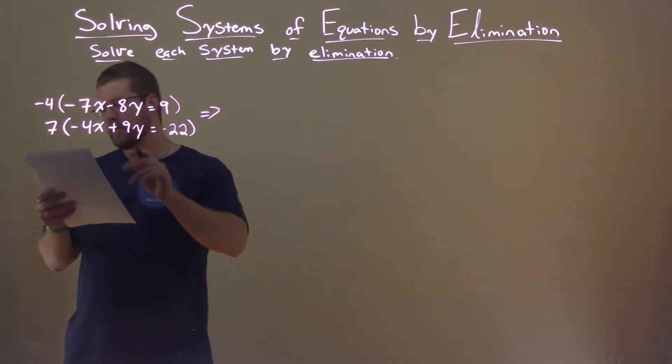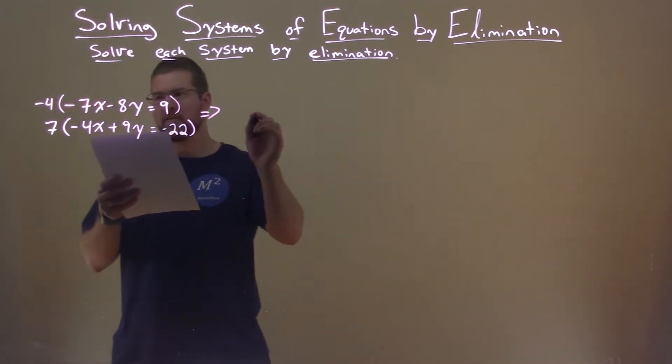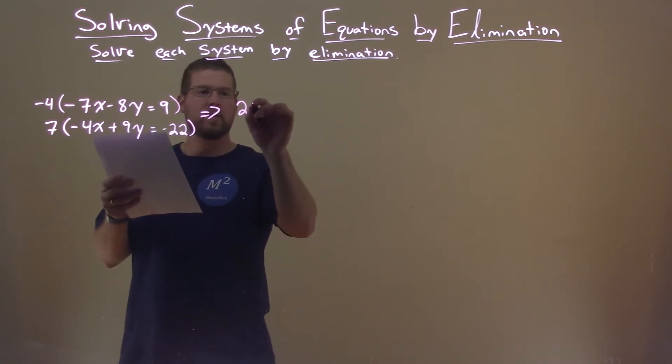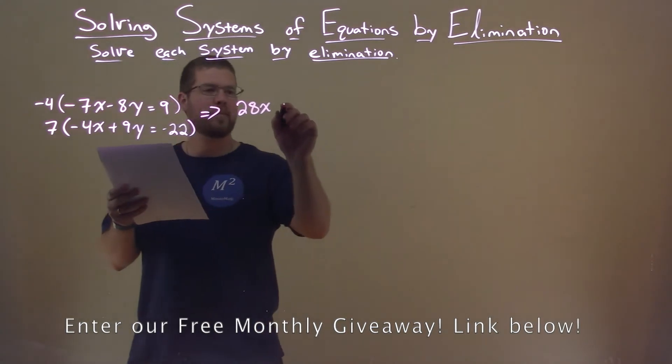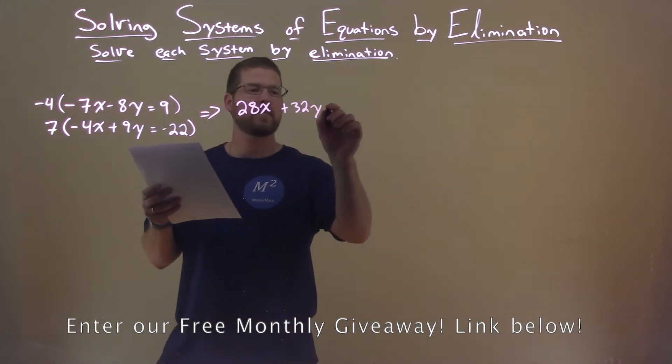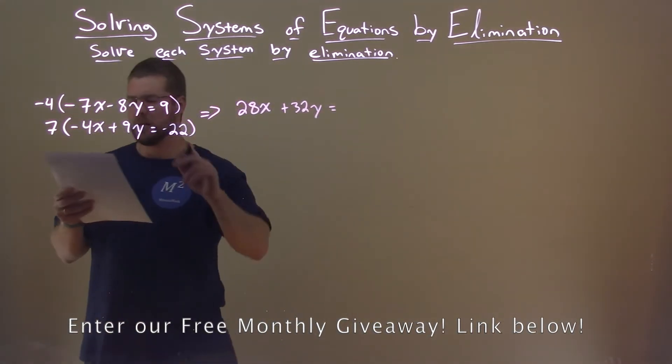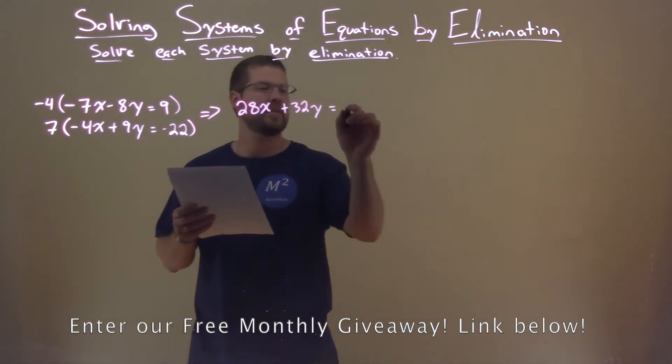So what does this look like? Let's go to the top. Negative 4 times negative 7x is a positive 28x. Negative 4 times negative 8y is a positive 32y. And negative 4 times 9 is negative 36.